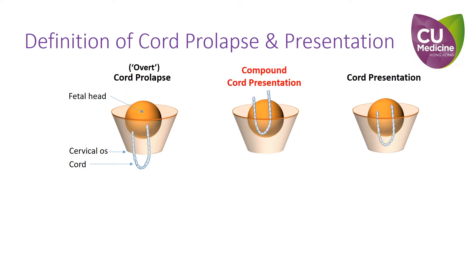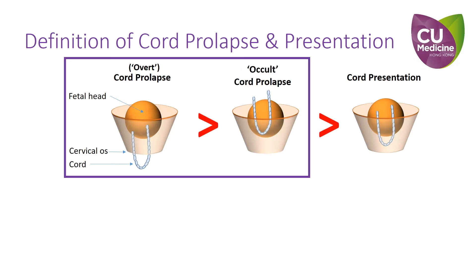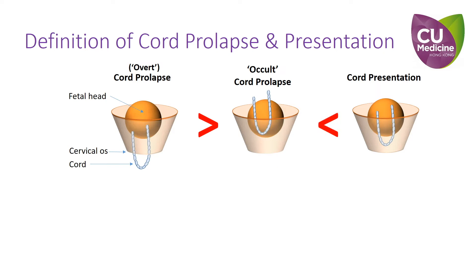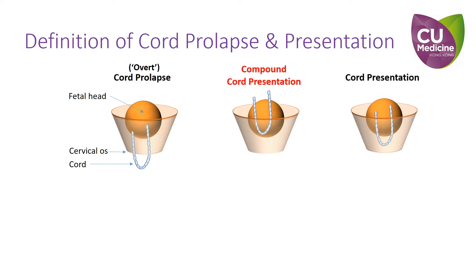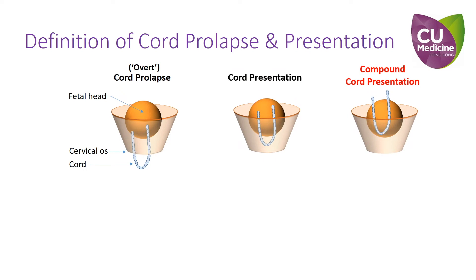Why is it important to get the definition right? Cord prolapse is supposed to be more risky than cord presentation. But in fact, this so-called occult prolapse is less severe than the latter in terms of progression to genuine cord prolapse, as the fetal presenting part displaces the cord from the cervical os. As such, the misnomer occult prolapse is misleading in the estimation of its risk. Therefore, occult prolapse should be replaced by compound cord presentation to accurately reflect the risk of these conditions, which are related to the degree of descent of the cord.